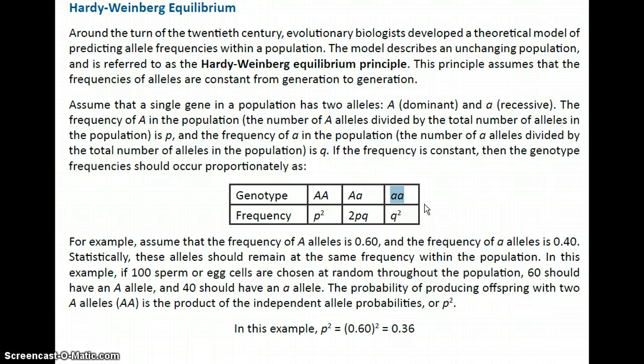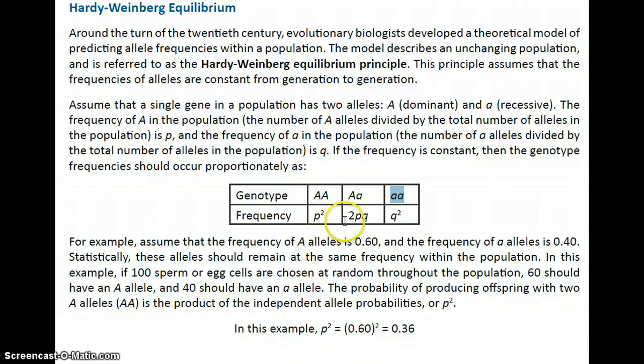The allelic representation is the genotype — geno meaning gene type. The combination of alleles results in the phenotype — pheno meaning physical — so the phenotype is how the organism expresses its genetic information. Now the Hardy-Weinberg equation is p squared plus 2pq plus q squared.